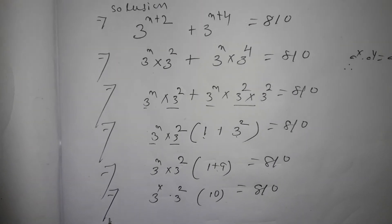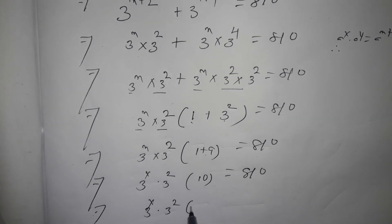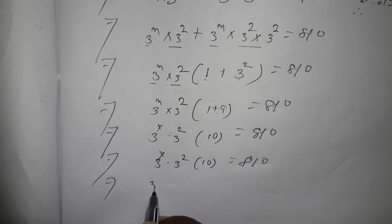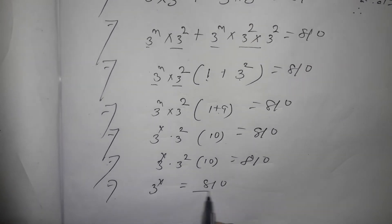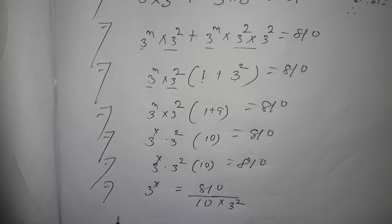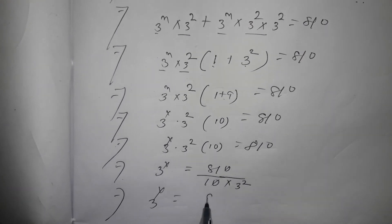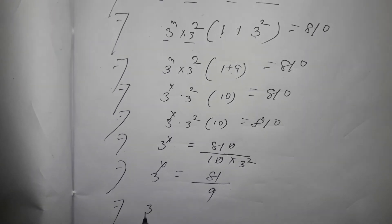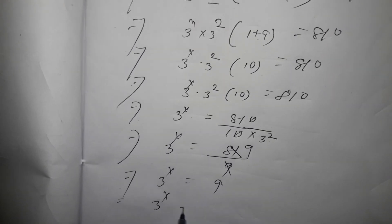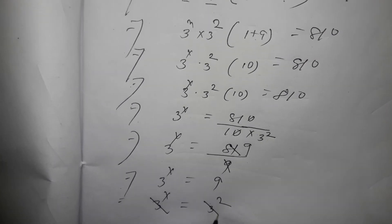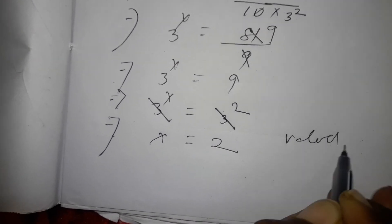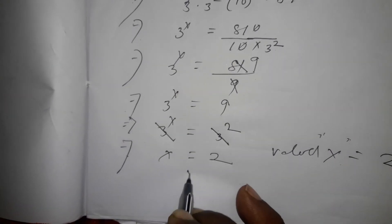So 3 to the power x into 3 to the power 2 into 10 equals 810, since 1 plus 9 equals 10. Therefore 3 to the power x equals 810 divided by 10 divided by 9, which gives 3 to the power x equals 9, or 3 to the power x equals 3 squared. Comparing both sides, x equals 2. The value of x is 2.